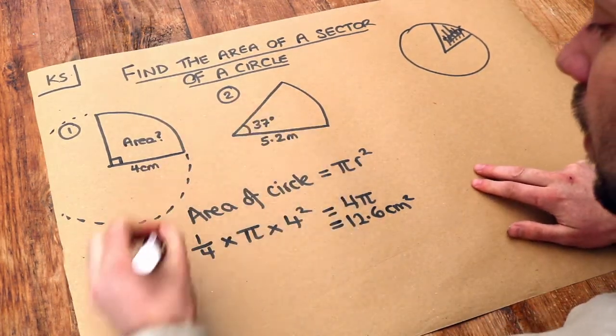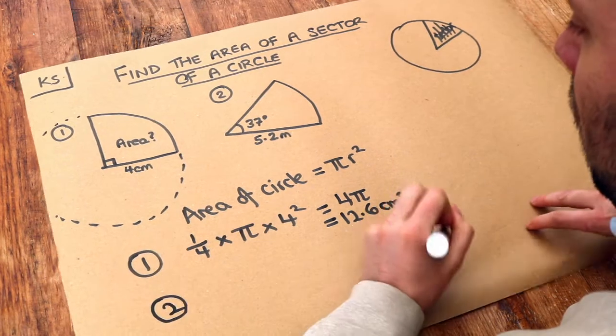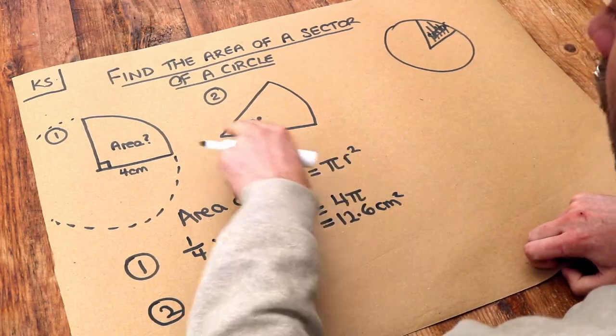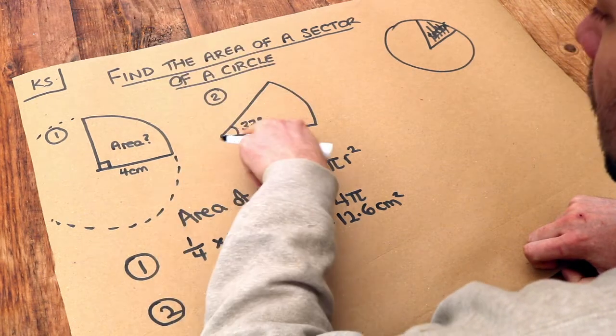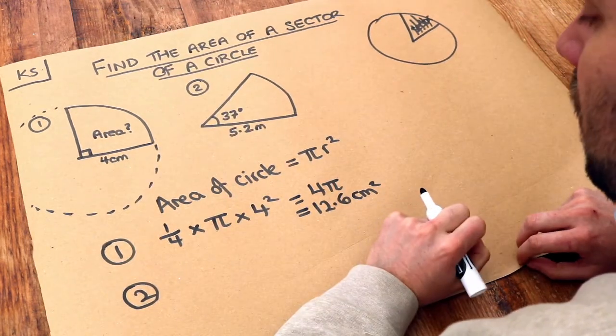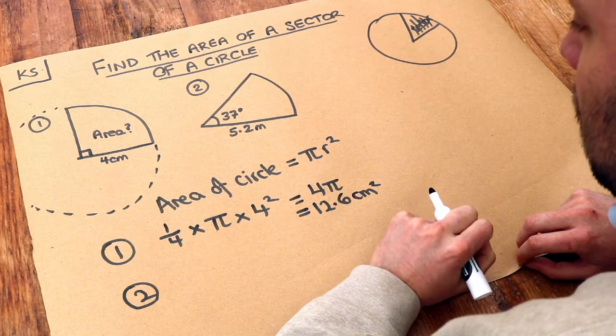Now, the second one here, the fraction of the circle is not quite so obvious. It's not like half, it's kind of maybe an eighth of the circle, a tenth of the circle, something like that. But we need some way to be able to find that without just guessing.